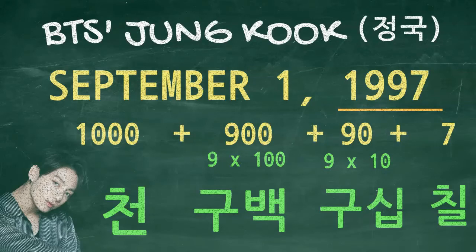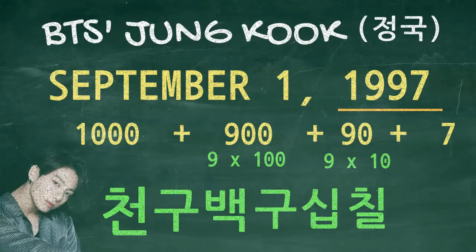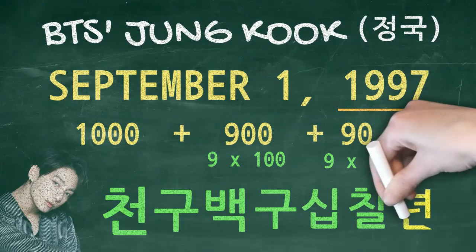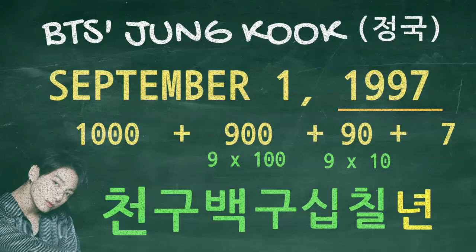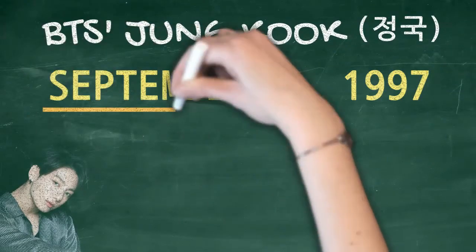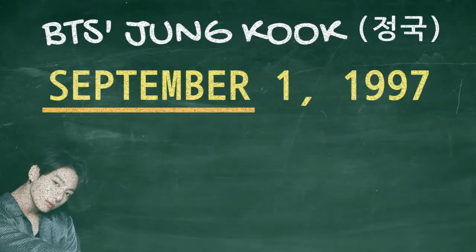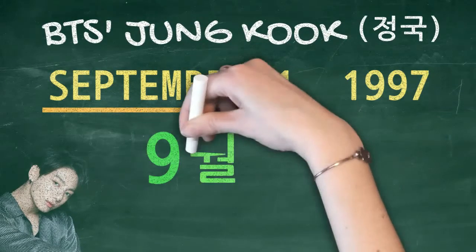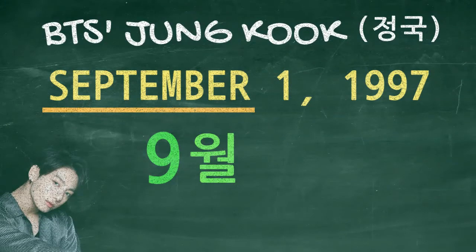The year would be 천구백구십칠년 (cheon-gu-baek-gu-sip-chil-nyeon). For the month, September is the ninth month of the year, so we'll put nine. That would be 구월 (gu-wol).